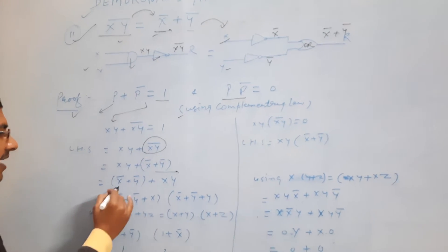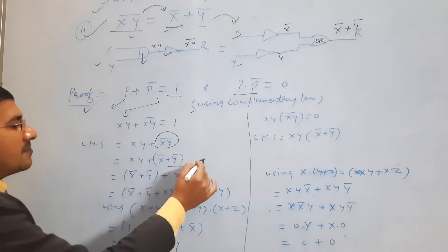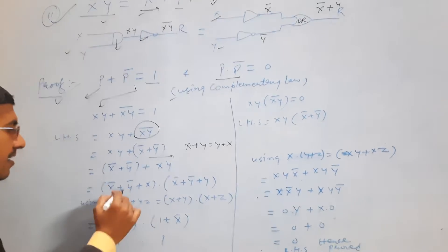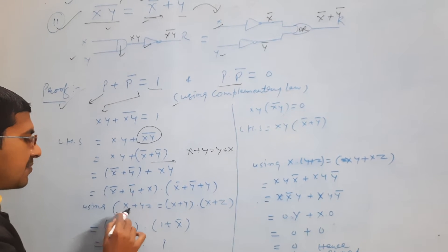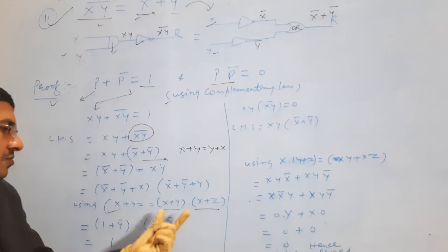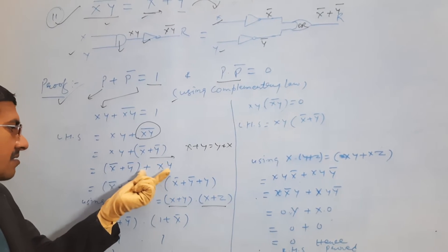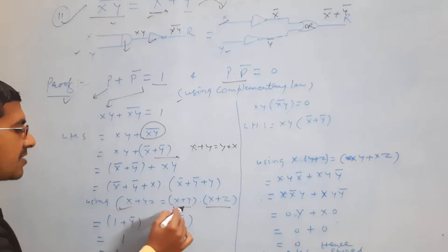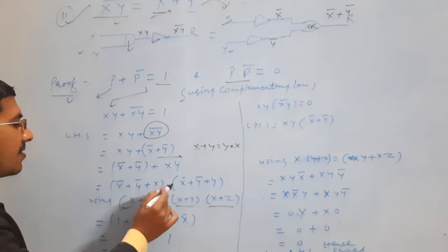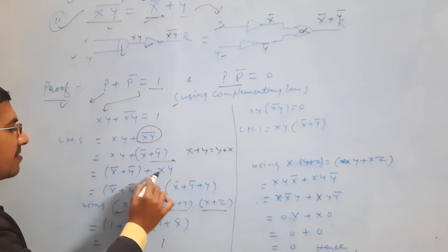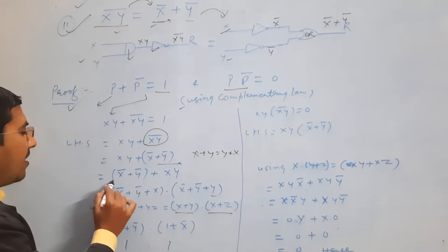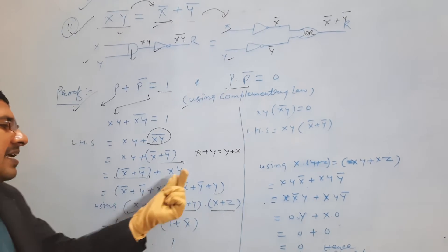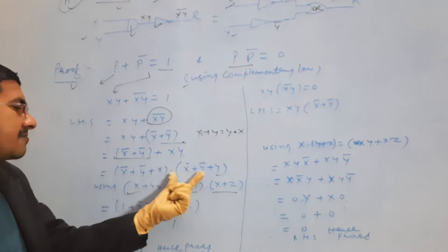Now we can write x bar plus y bar plus xy. Because x + y is the same as y + x using the commutative law. Using the distributive property, x + yz = (x + y)(x + z). We apply this distributive property to get (x' + y' + x) · (x' + y' + y). Here we assign x' + y' as one grouped value, x and y as the respective terms.